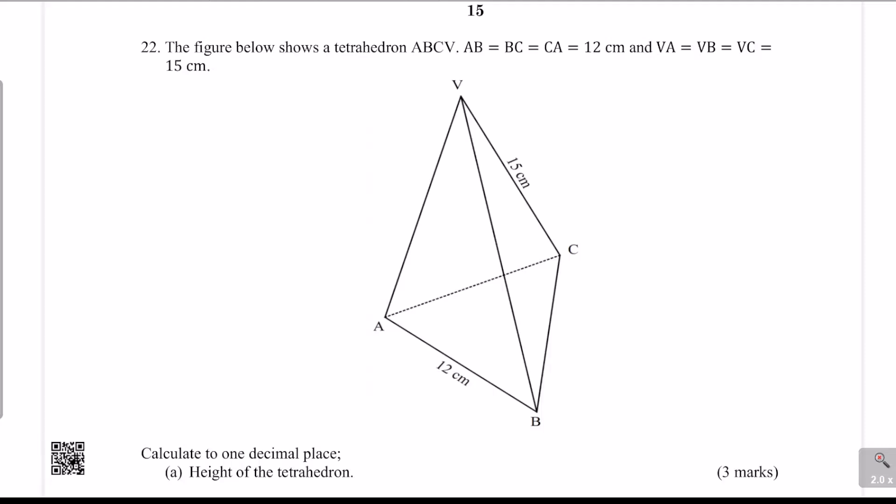The figure below shows a tetrahedron ABCV. AB equals BC equals CA equals 12 cm, and VA equals VB equals VC equals 15 cm. That means all the slant heights are equal in this diagram — all the slants are equal. It's a right tetrahedron.